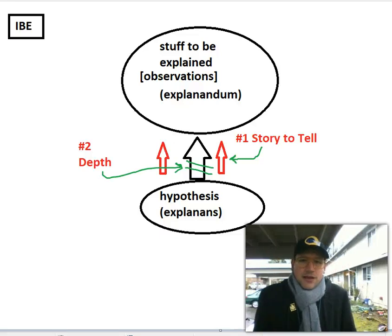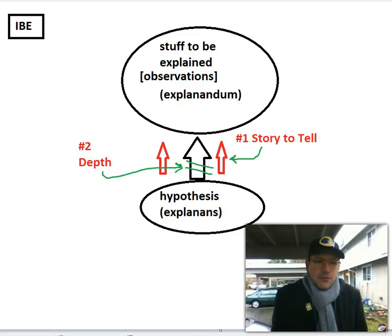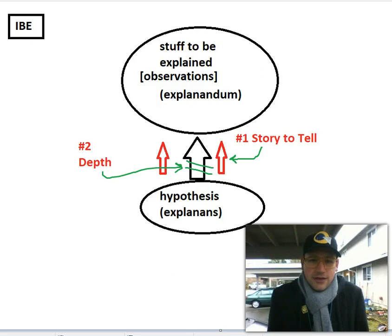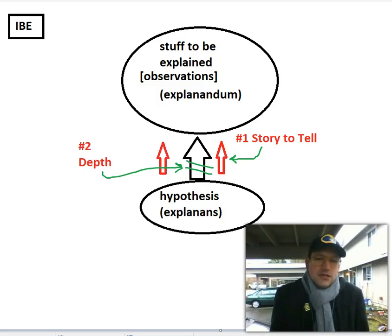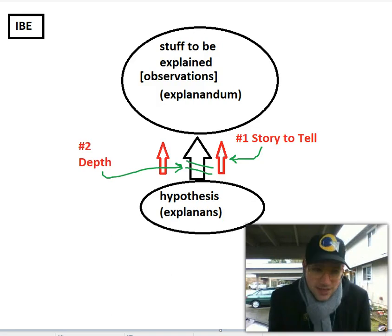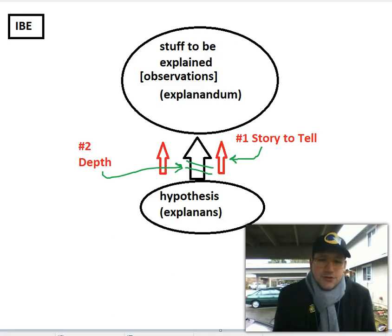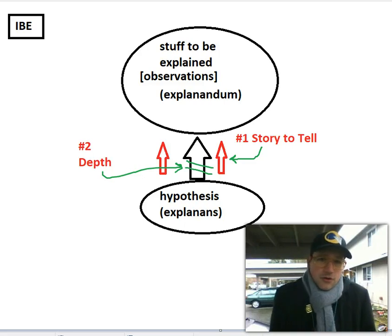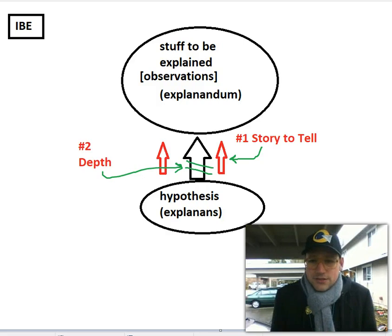Hey everyone. Picking up right where we left off yesterday, we were talking about inference to the best explanation. We're not going to be evaluating the full logic of a full inference to the best explanation, because that requires figuring out what's the best explanation, and we'd have to compare the explanation being offered with other alternative ways of trying to explain what is to be explained.